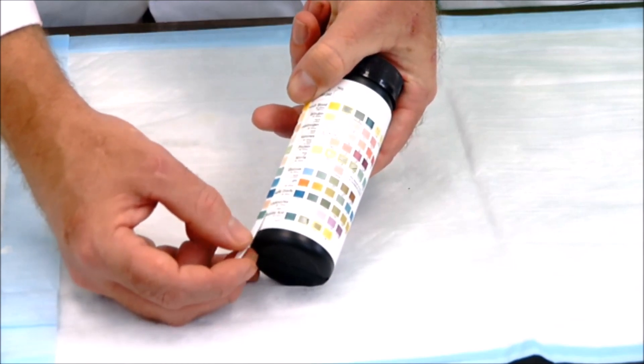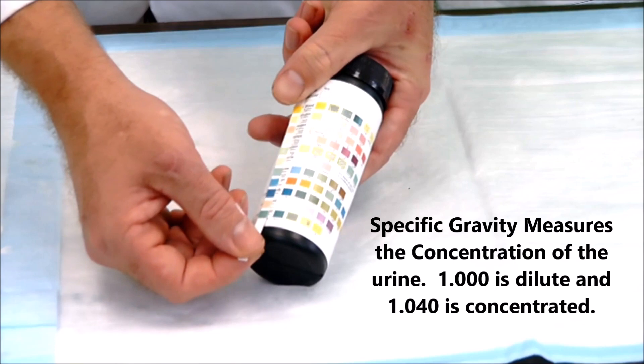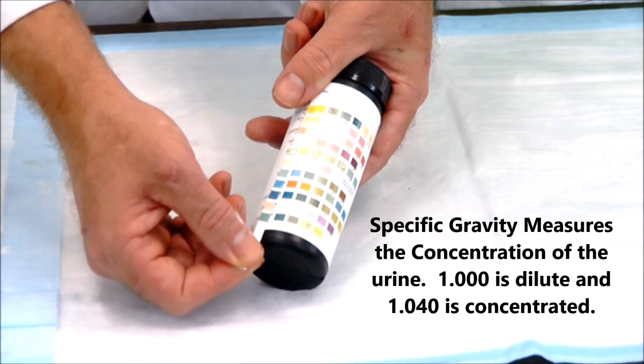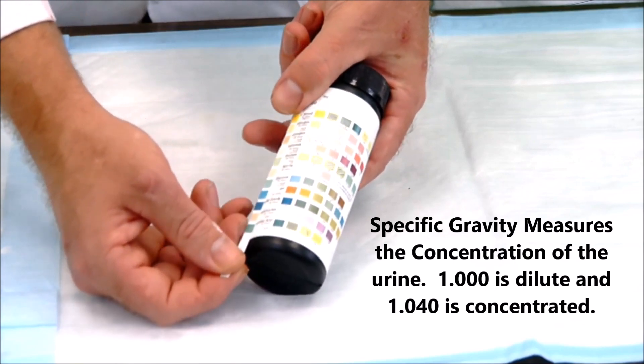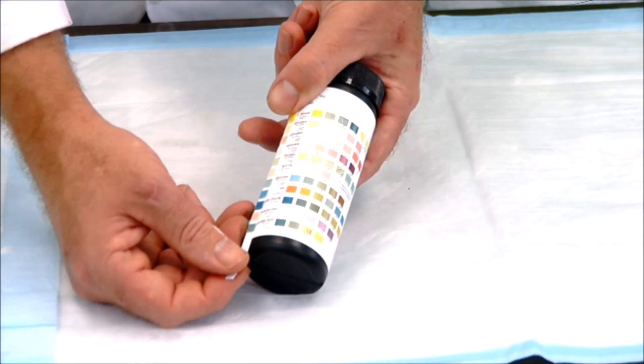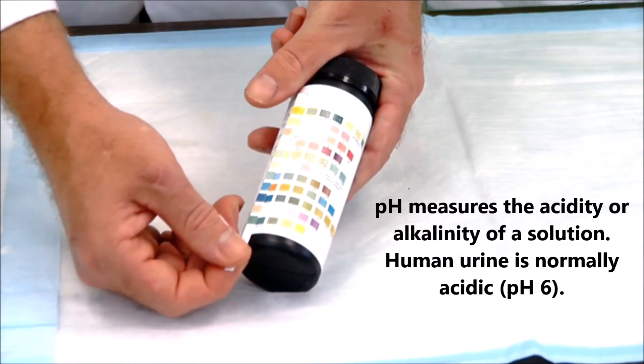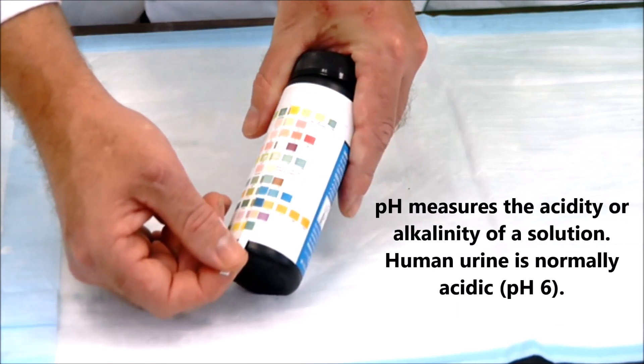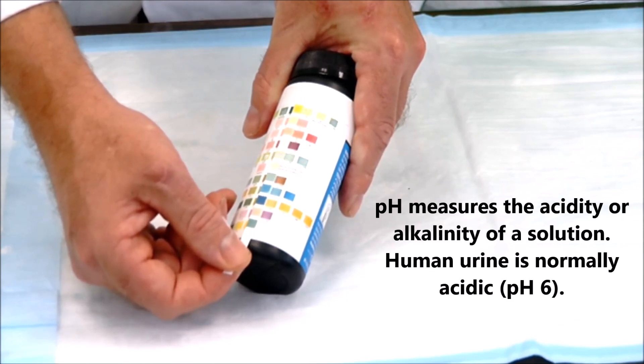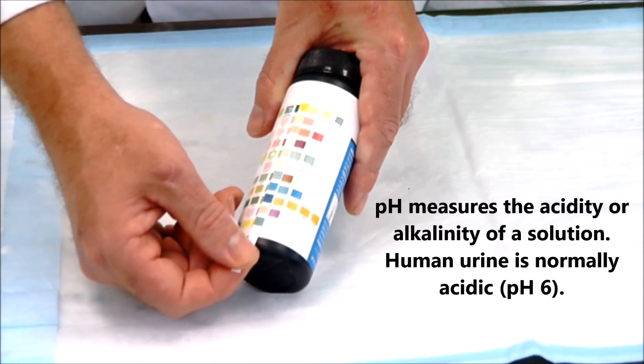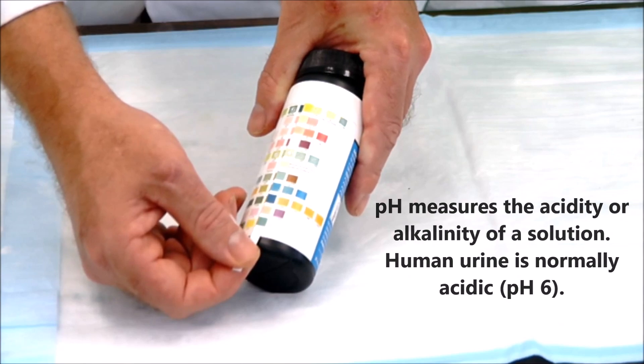Next is specific gravity. The specific gravity here matches up with 1.000, which is the same specific gravity as normal water. Now I'm going to look at the pH. Well, this pH thing goes all the way over to here. It seems like I have a pH of about 8, and that is alkaline, and that is unusual for urine. Normally, urine has a pH of around 6.